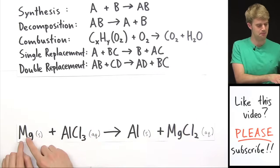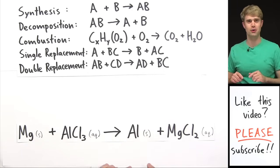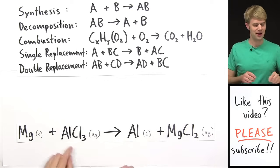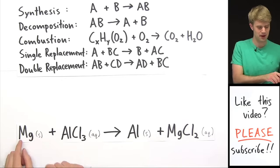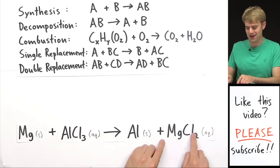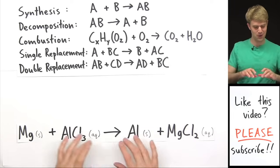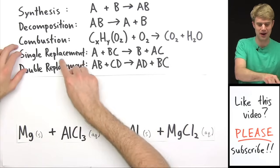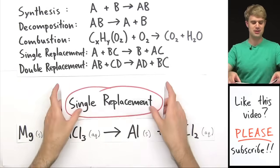Here's our first. Magnesium and aluminum chloride give us aluminum and magnesium chloride. So what's happening here? We have aluminum and chloride paired up here. Magnesium is on its own. And then magnesium comes and takes the place of aluminum. Magnesium pairs up with chloride and kicks aluminum out. So when something like this happens, we're talking about a single replacement, also known as a single displacement reaction.